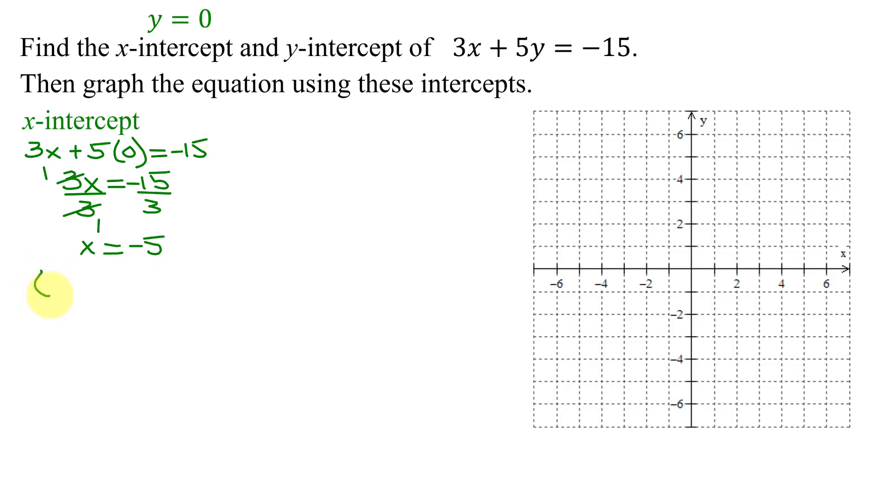So the x-intercept is the point where x equals negative 5 and y equals 0. So graphing that point, x equals negative 5 means go 5 to the left, y equals 0, go nowhere in the y direction. So there's my x-intercept.